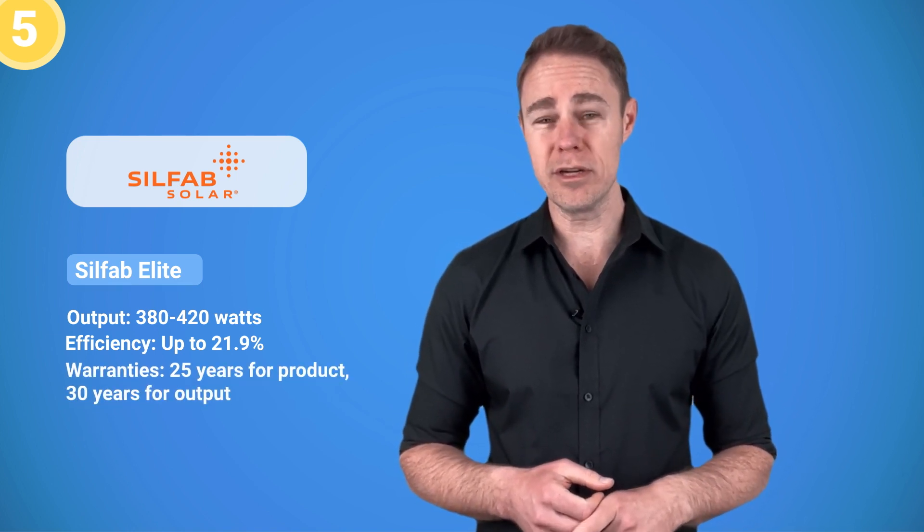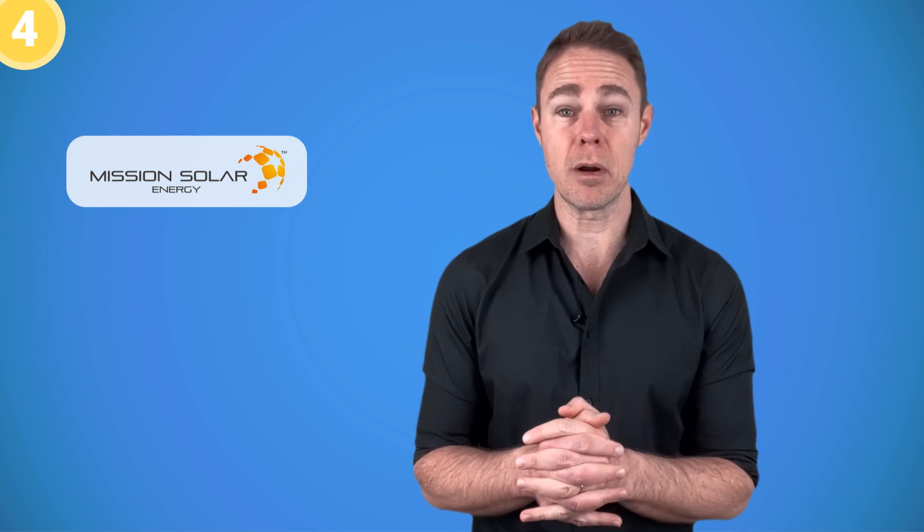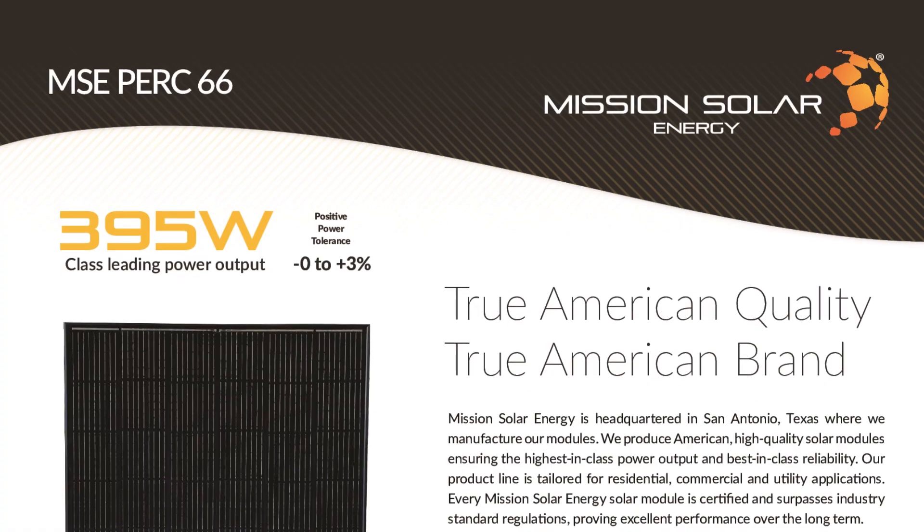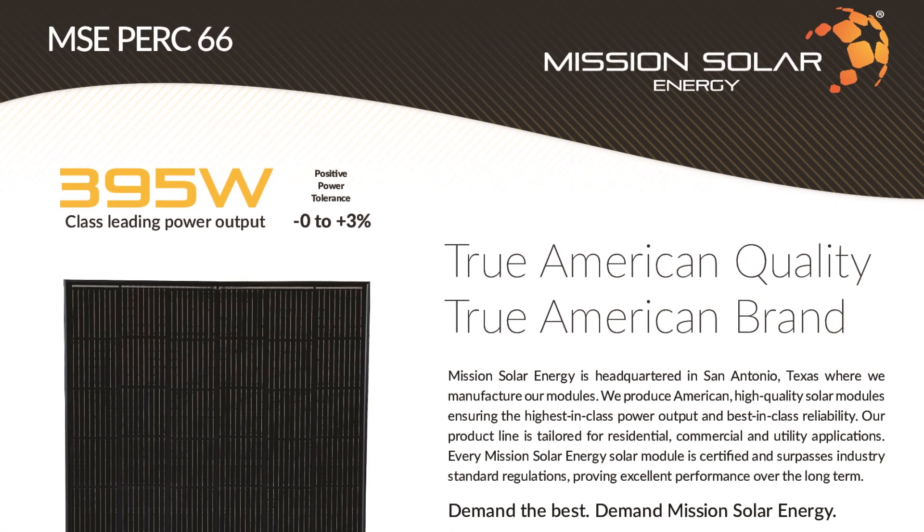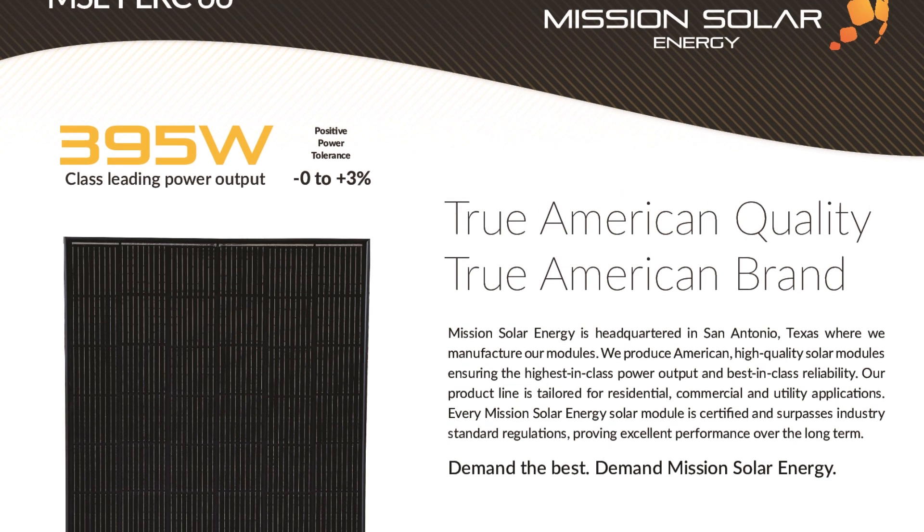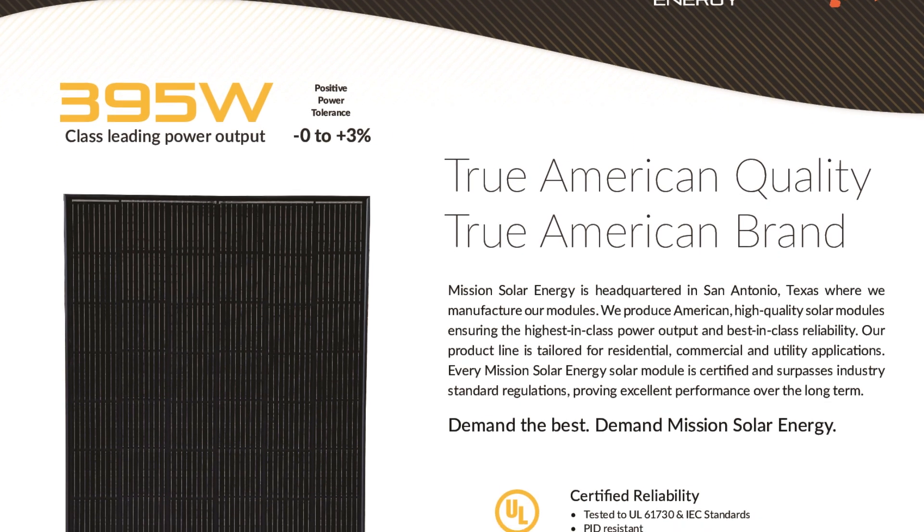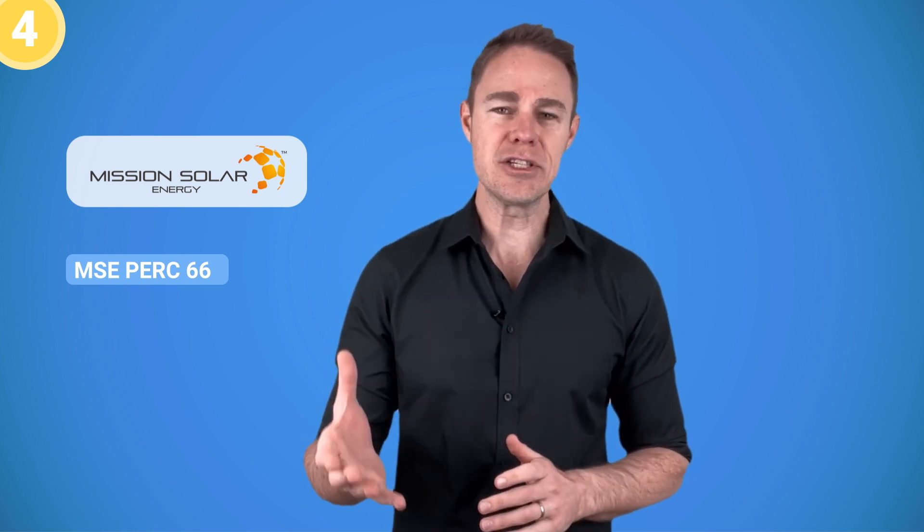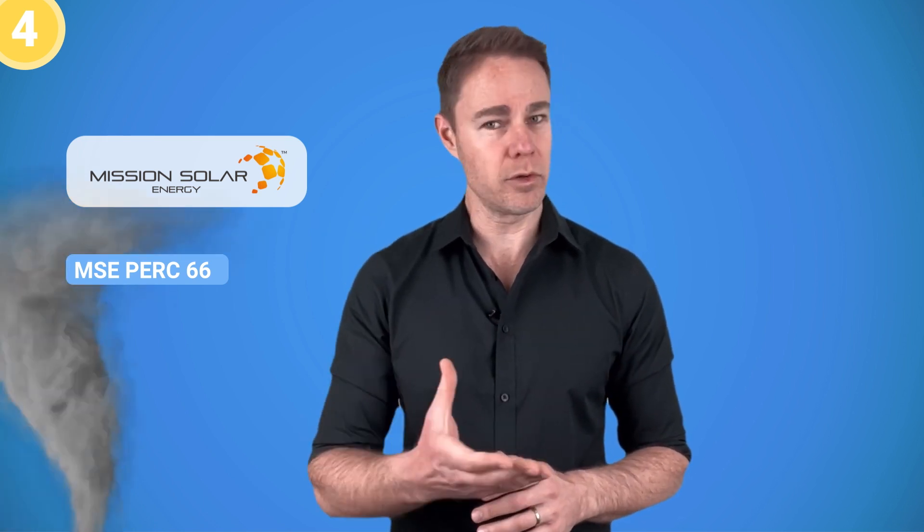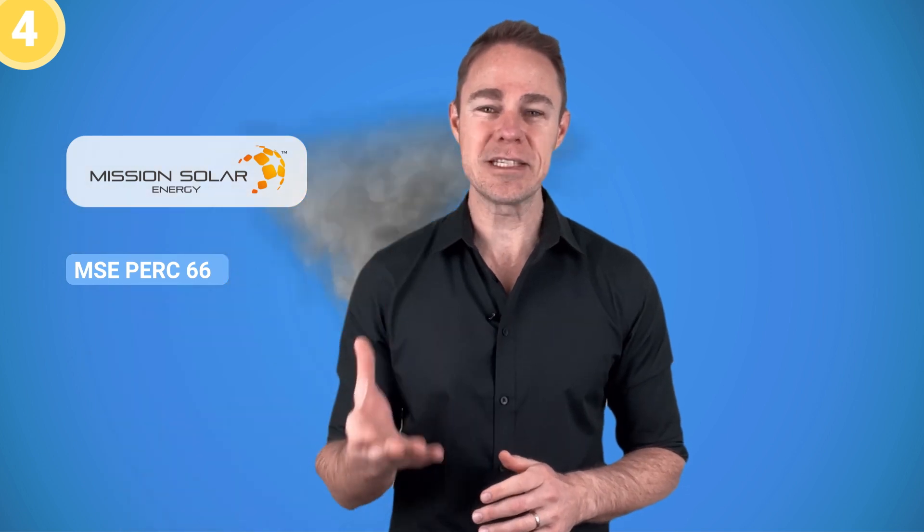Next up we have Mission Solar from San Antonio. Their best solar panel for home is probably the MSC PERC 66. It provides up to 395 watts of power output. There is nothing too special about it—it's just a good, solid all-black panel, not too expensive and not too cheap either. It's very sturdy, which is important for Texas with all of its tornadoes, and it can easily withstand wind of up to 210 miles per hour.